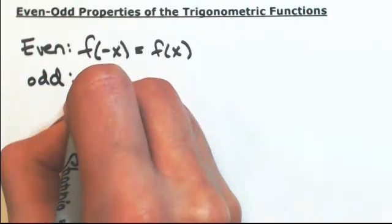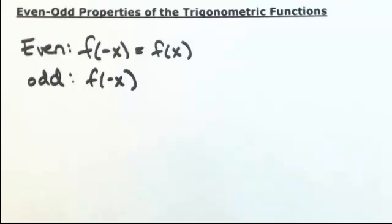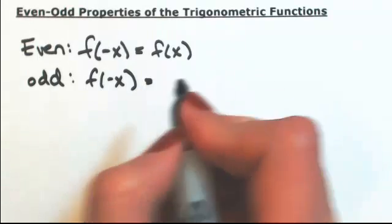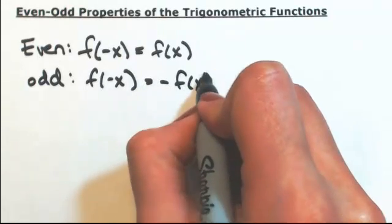If you have an odd function, same idea - you put in a negative input and the odd function throws it back out, giving you a negative output.